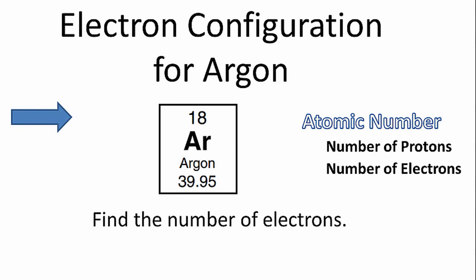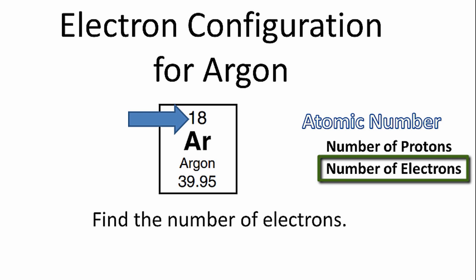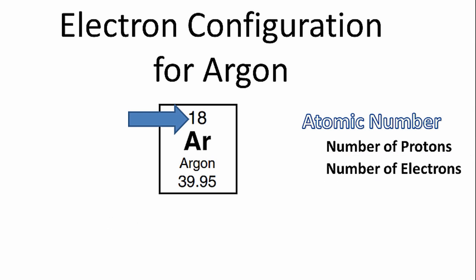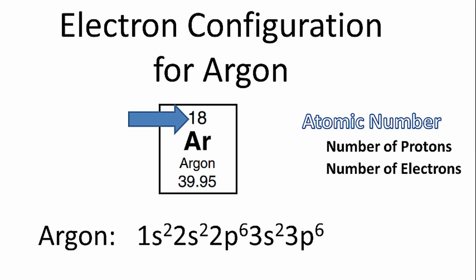To write the electron configuration for argon, we first need to figure out how many electrons there are in the argon atom. We can do that by looking at the periodic table and finding the atomic number for argon. That's the number above the element symbol. It tells us the number of protons, but it also tells us the number of electrons. And once we have the number of electrons, we can begin to write the electron configuration for argon.